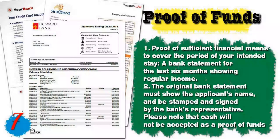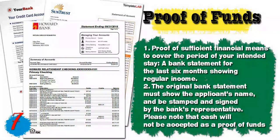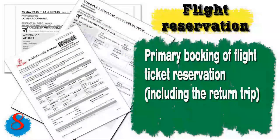Number six: for foreigners — if you are not applying in your own country of citizenship — provide the original and photocopy of your valid residence permit, employment or student status certificate, or other valid legal stay documents. Number seven: proof of funds — a bank statement for the last six months showing regular income, stamped and signed by the bank. Cash is not accepted; if you have no bank account, proof of assets can be presented. Number eight: a flight reservation including the return trip.